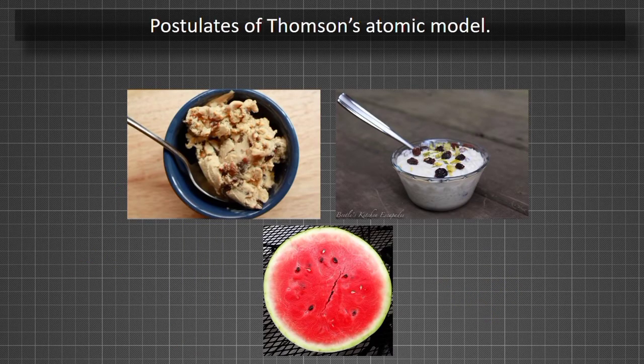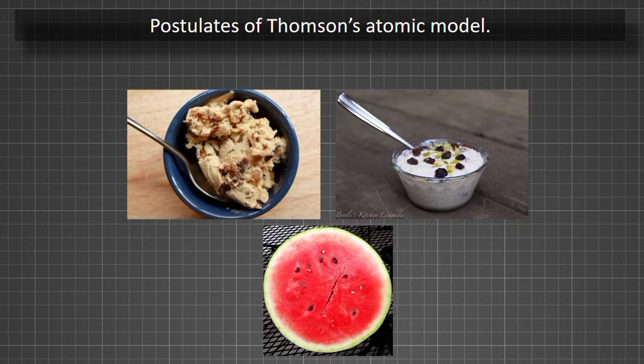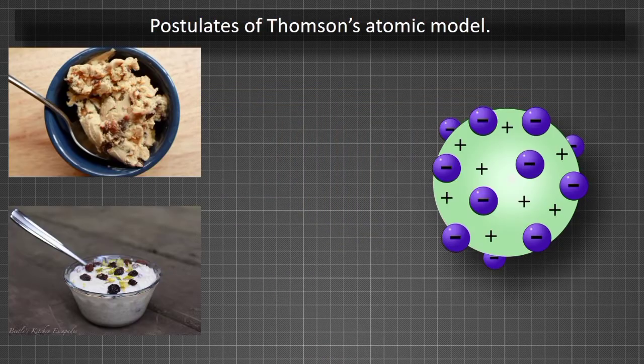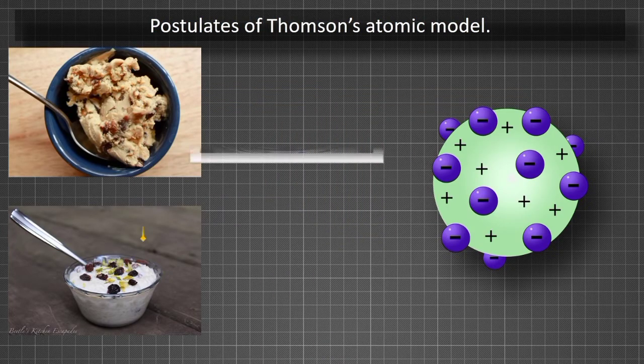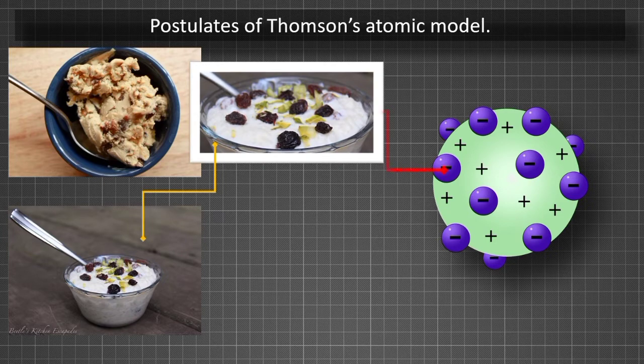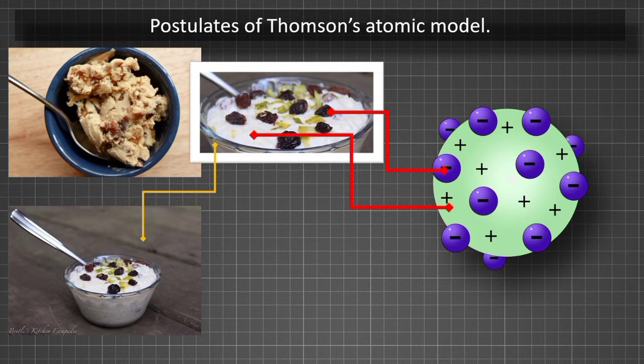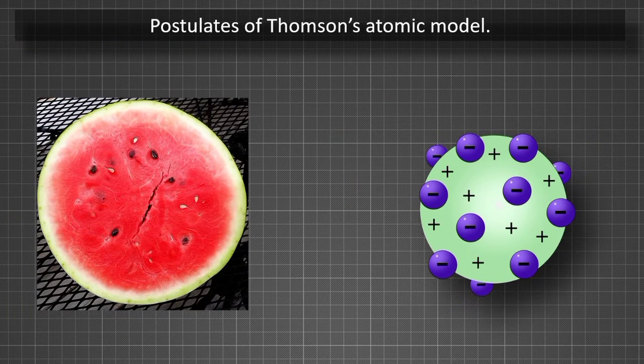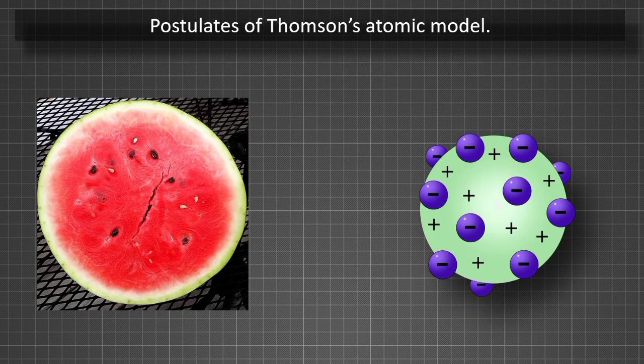Thompson's Atomic Model resembles a spherical plum pudding as well as a watermelon. It resembles a plum pudding because the electrons in the model look like the dry fruits embedded in a sphere of positive charge just like a spherical plum pudding.